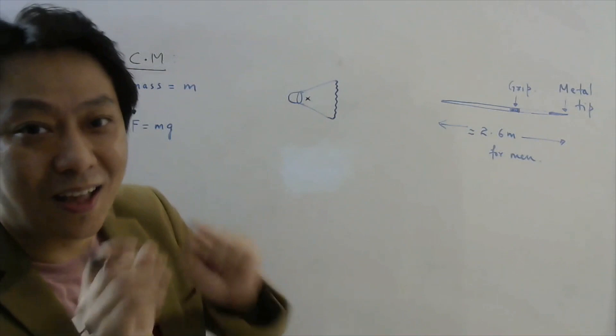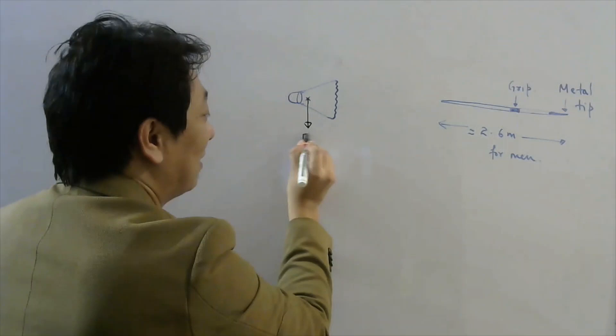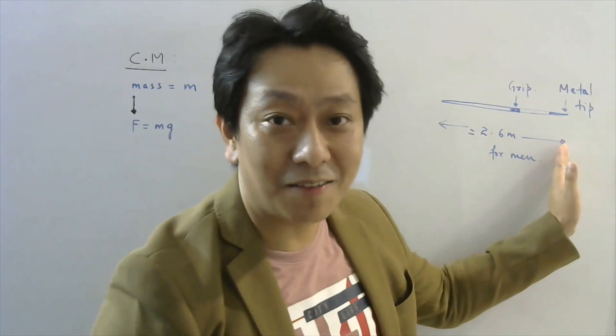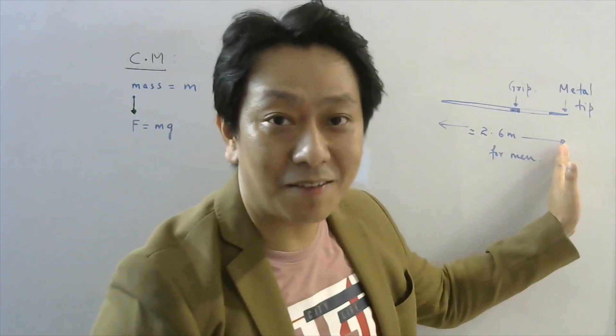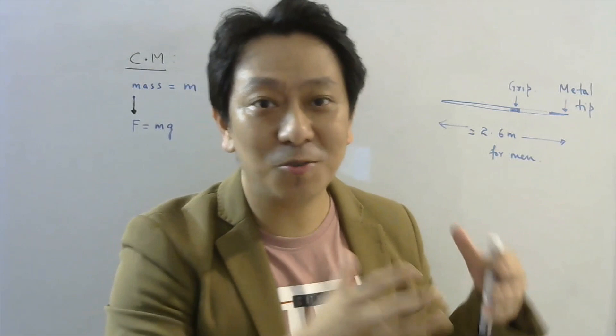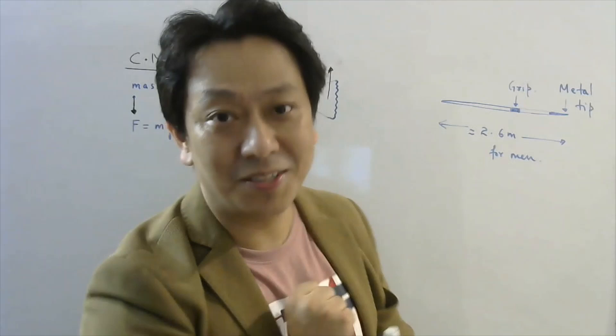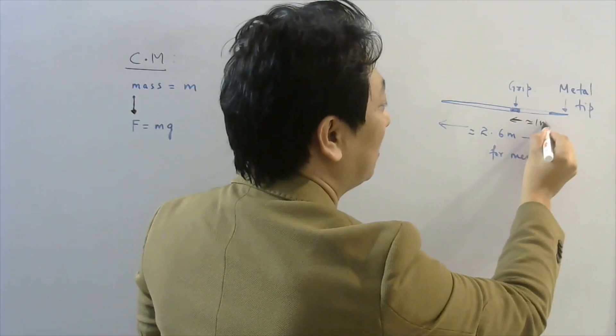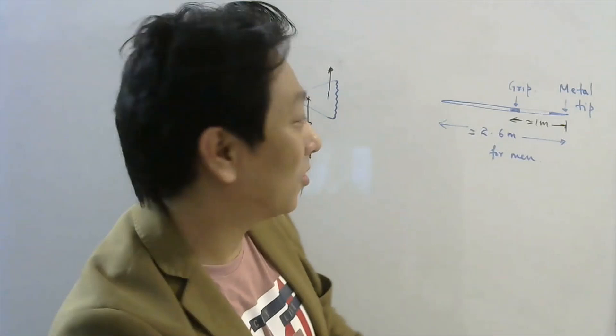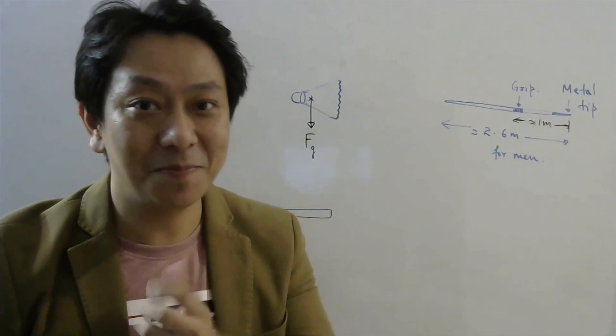Since for a shuttlecock the mass is more near the cork than near the feathers, the center of mass will be on that side. Once I know the center of mass, I can show the total gravitational force acting at just that one point — that is the concept of center of mass. For a men's javelin, which is around 2.6 to 2.7 meters long, the grip where the thrower holds is approximately 1 meter from the tip, and that is where the center of mass lies, since the metal tip has more mass.